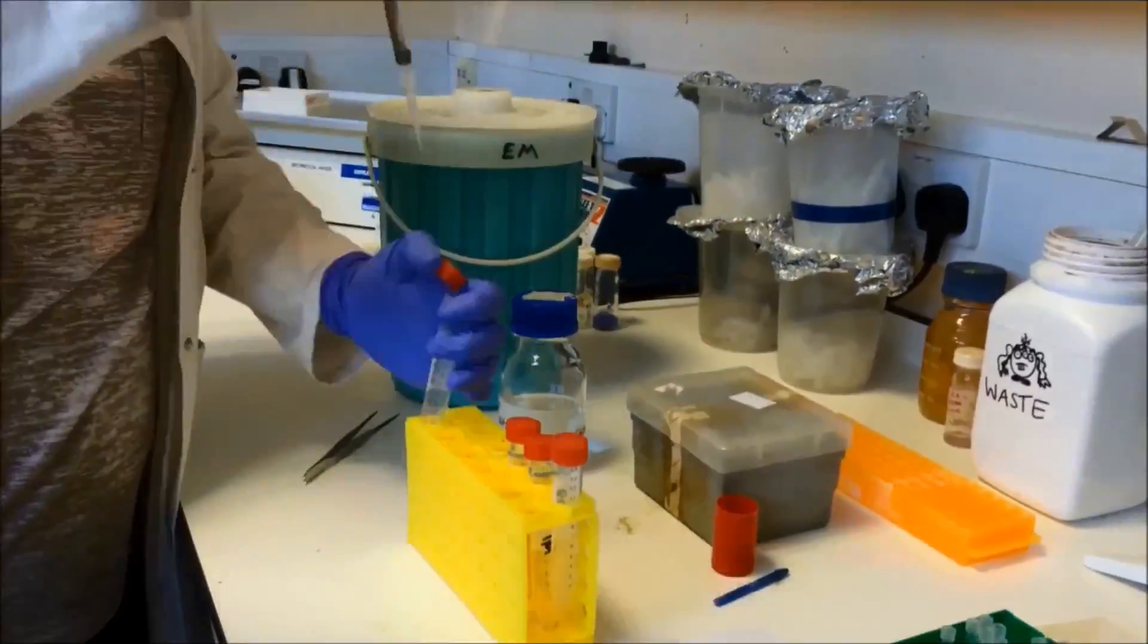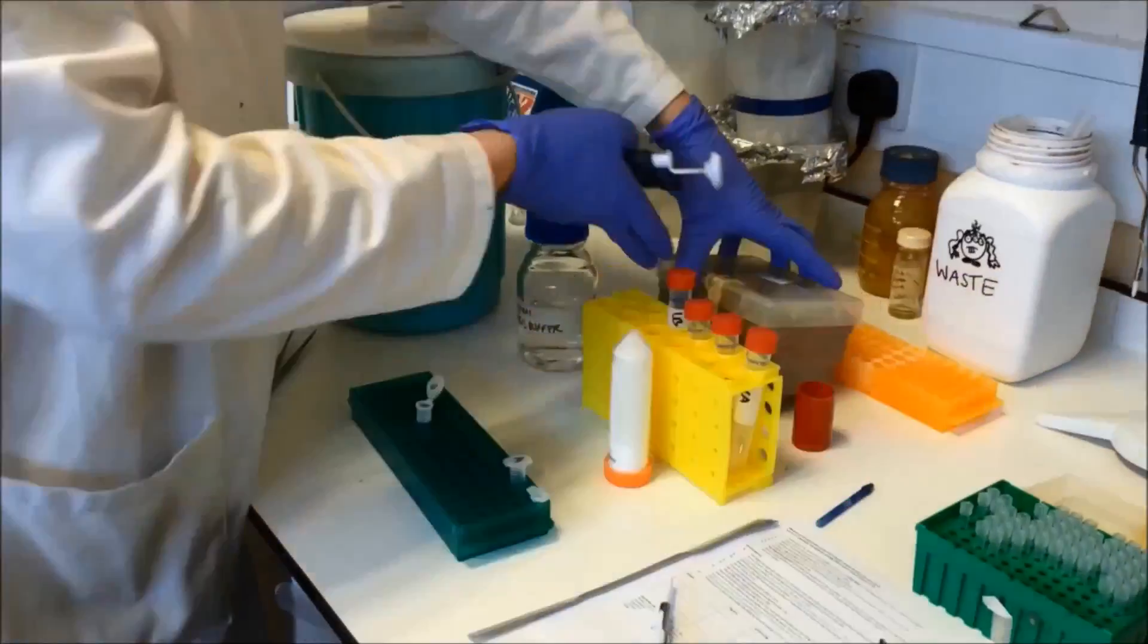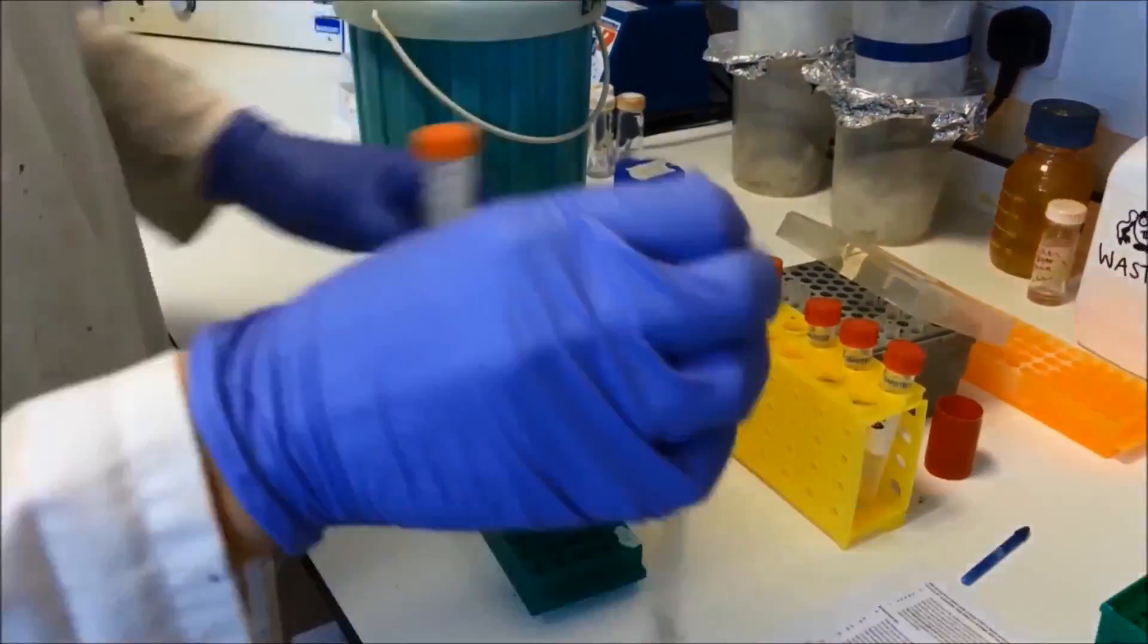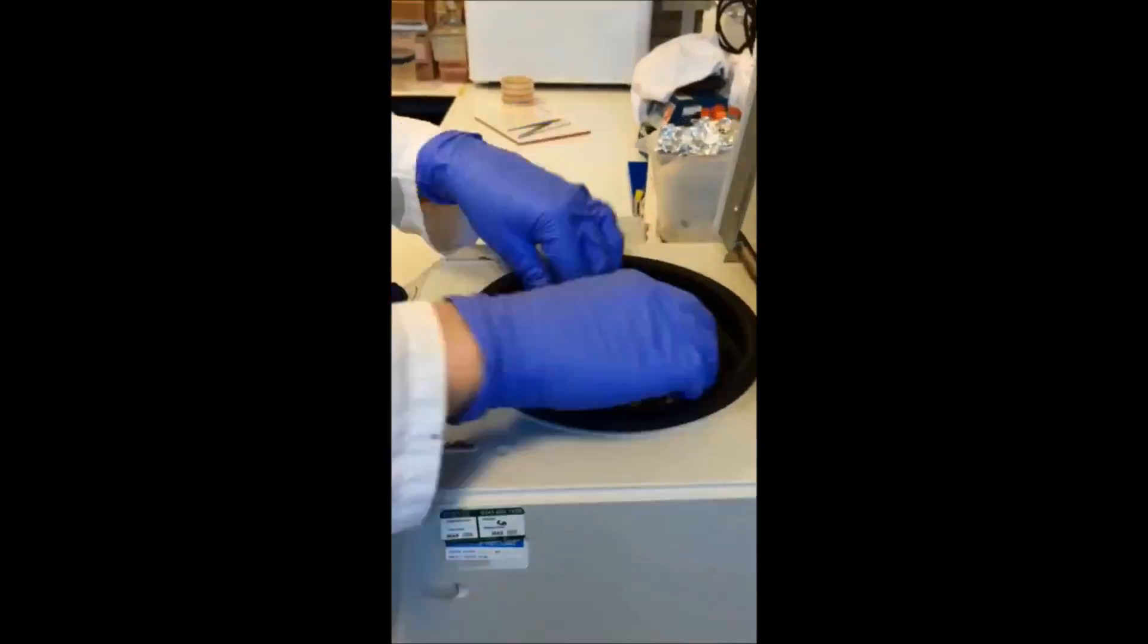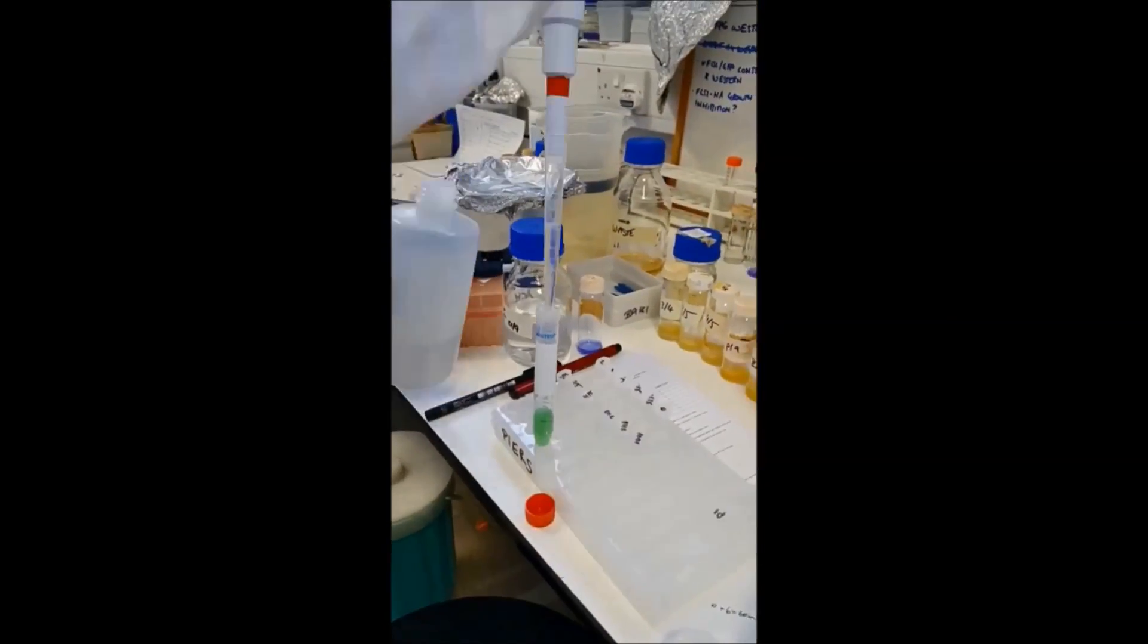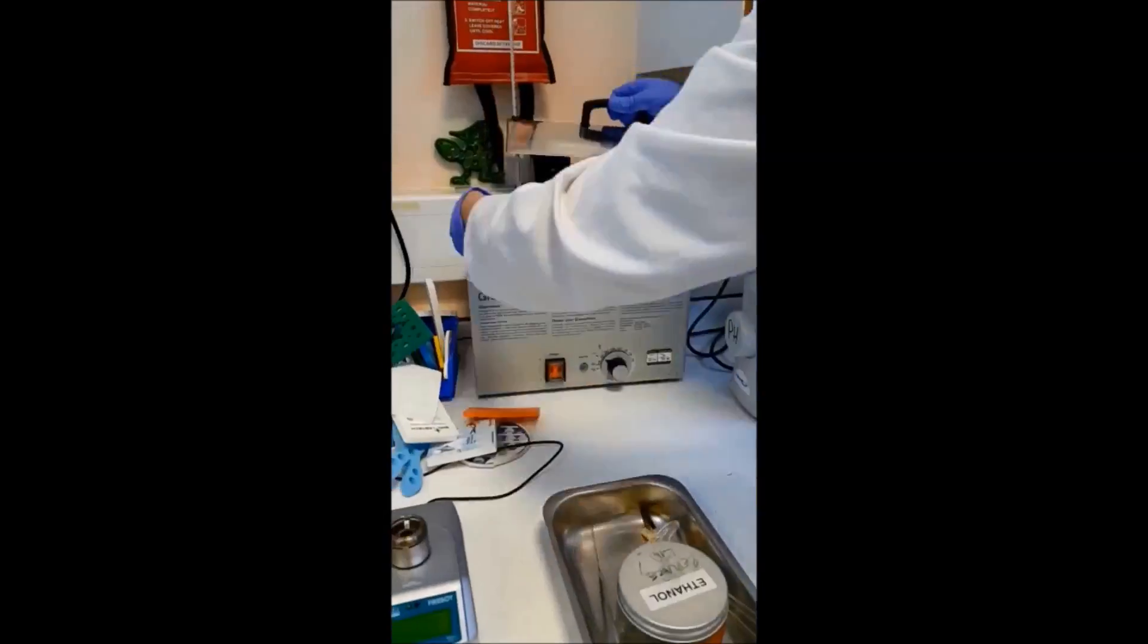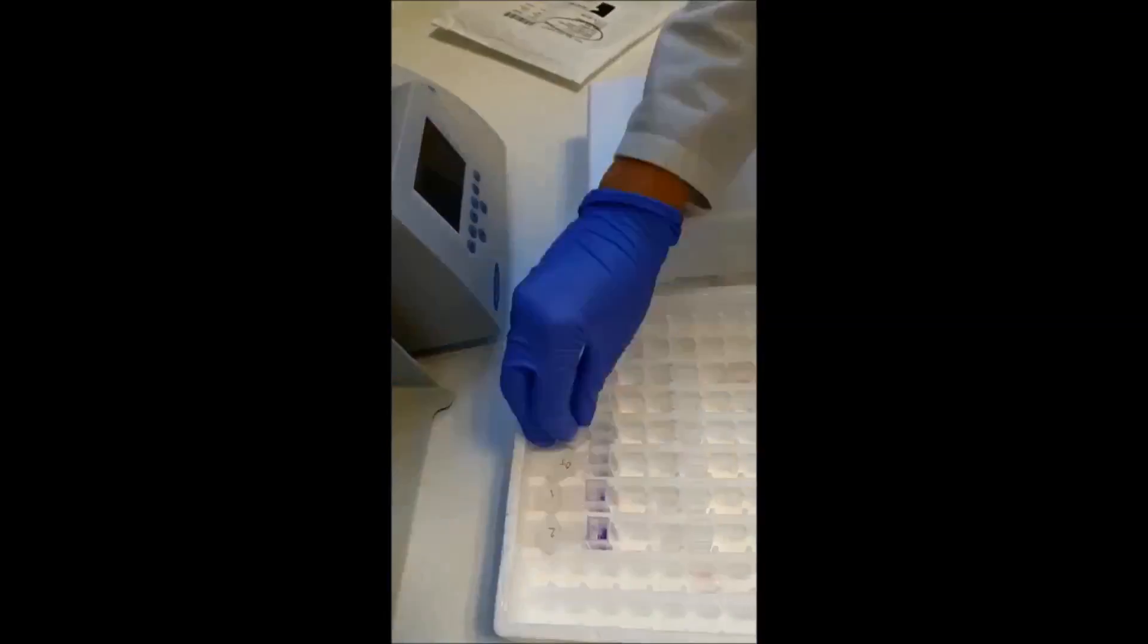A buffer is then added which helps to keep the proteins stable and make sure they don't break down. Next, we need to work out how much protein we have. To do this, we use a color-changing assay. The deeper the purple color, the more protein you have.